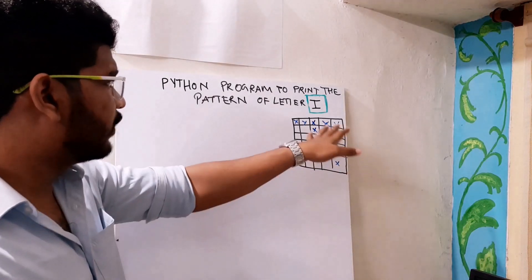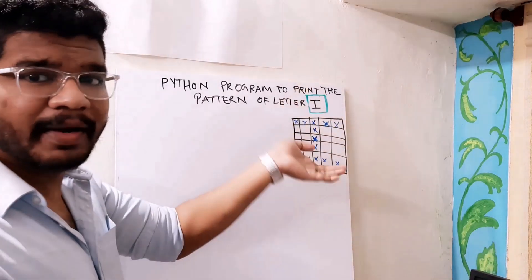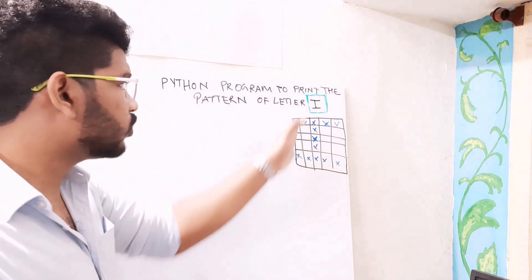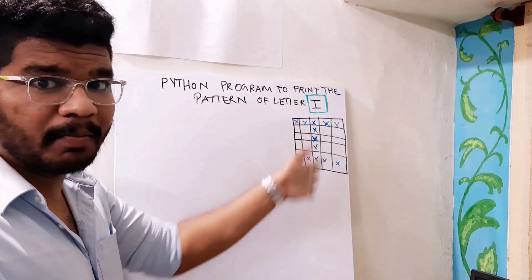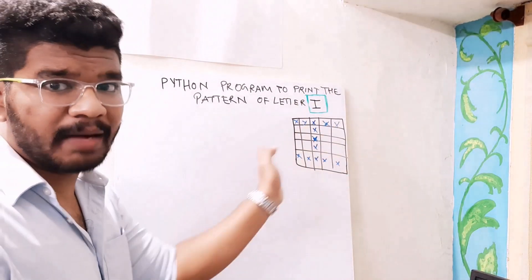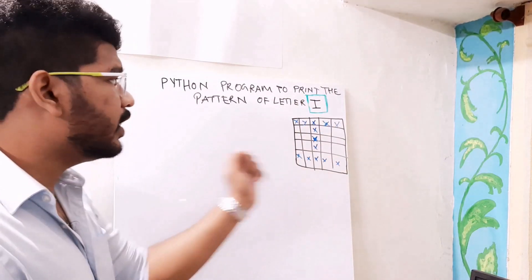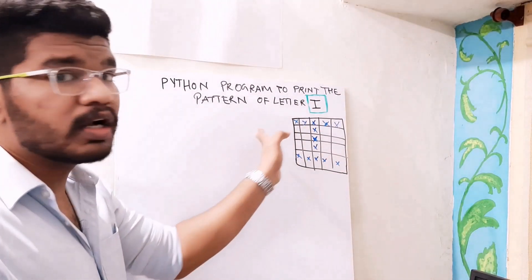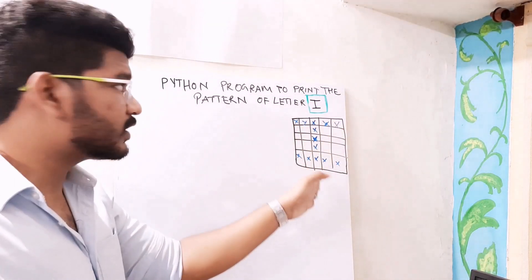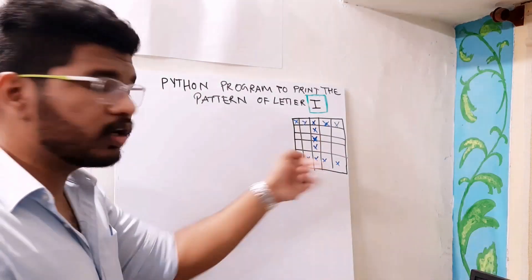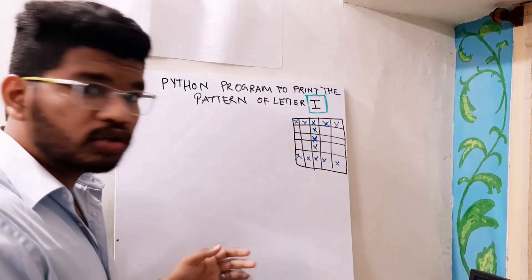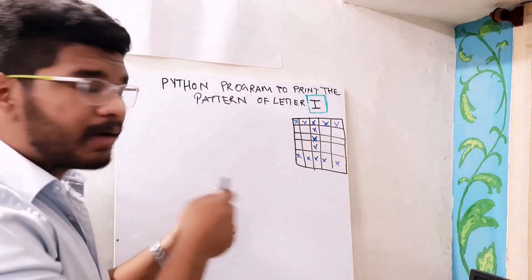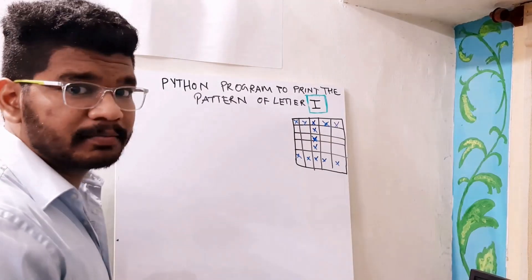In H, we print stars for the first column, last column, and middle row. Here, I will print stars for the first row, last row, and middle column — just the opposite of H. So let's see how we can print that I.